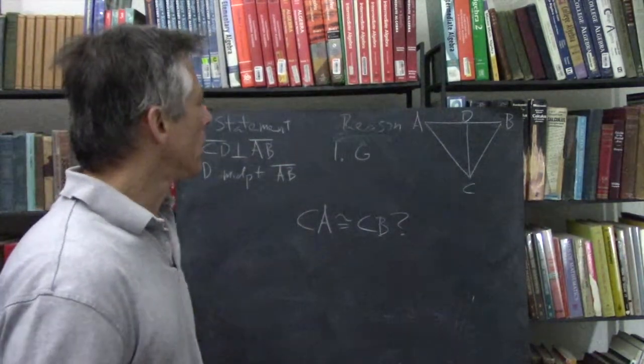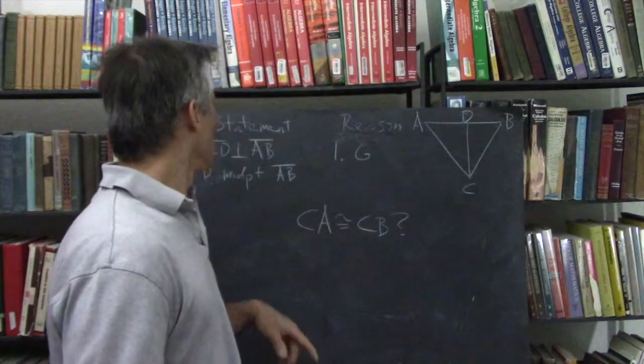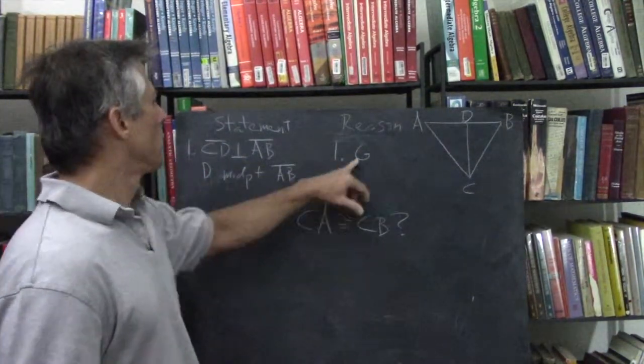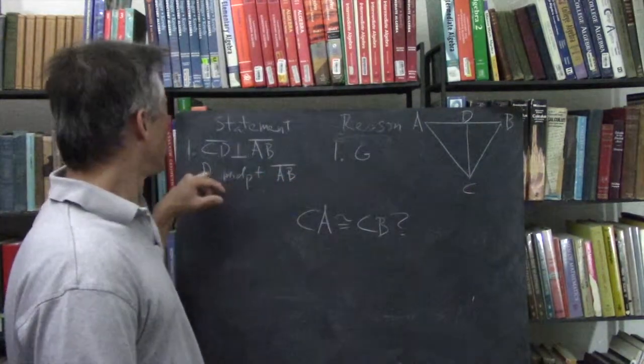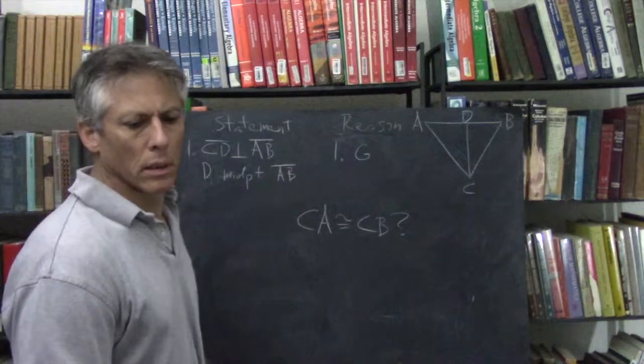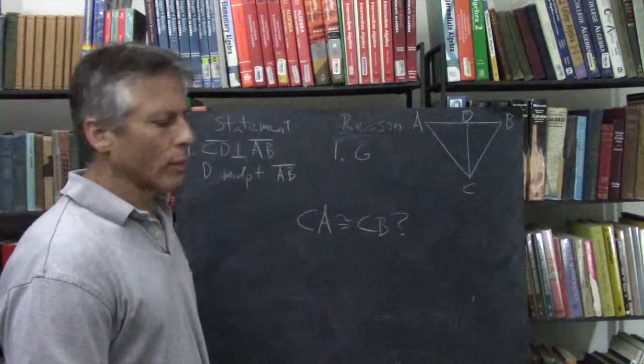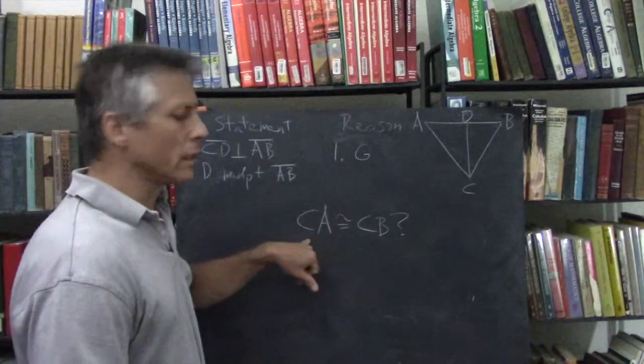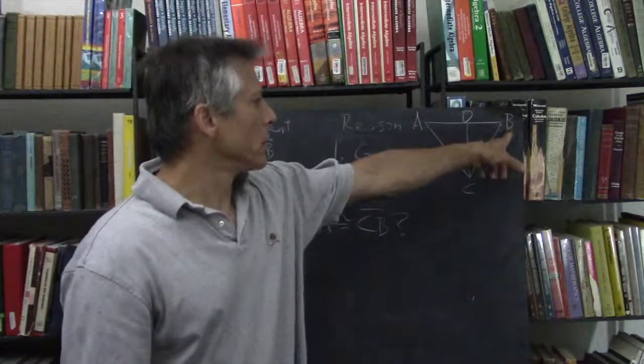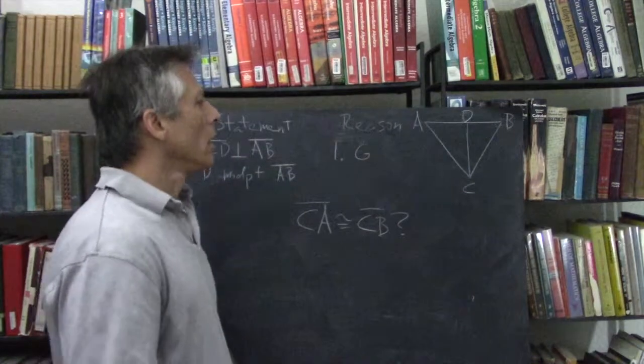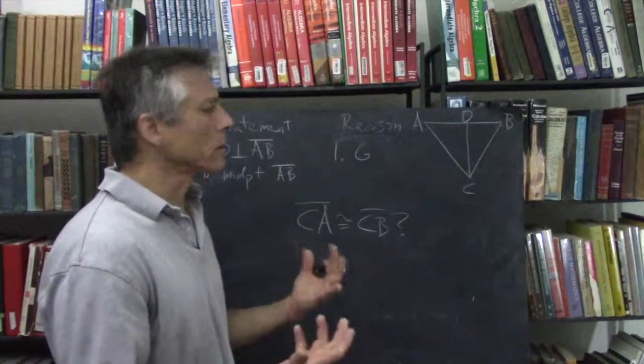ADBC, and we're given that CD is perpendicular to AB, and D is a midpoint of AB, and we want to see if CA is congruent to CB. Okay, those two segments. So, is this the same as this? So, we've got to think this through.